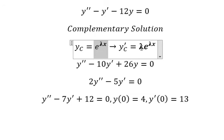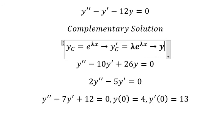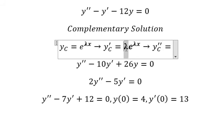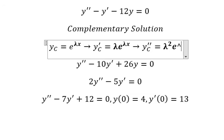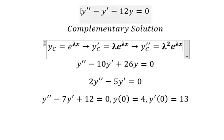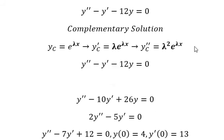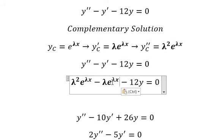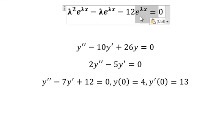We do the first derivative of e to the power of lambda x — you keep e to the power of lambda x — then the first derivative of lambda x gives lambda. For the second derivative we get lambda squared e to the power of lambda x. Now we substitute into the equation and factor out e to the power of lambda x.